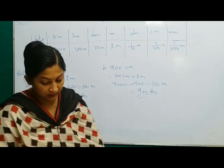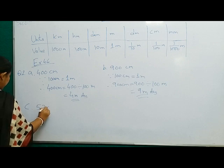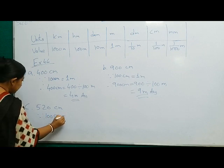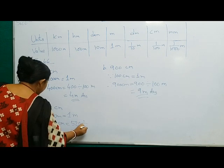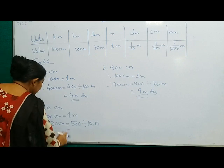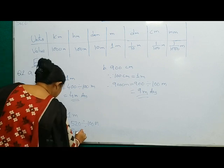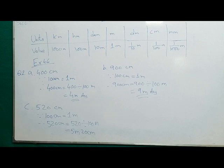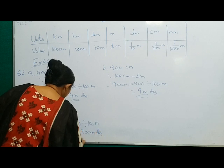One more I want to do, that is number C. Number C is given 520 centimeters. Since 100 centimeters is equal to 1 meter, therefore 520 centimeters is equal to 520 divided by 100. When you divide, you will get 5 as the quotient — so this 5 will be meters — and the remainder will be 20, so this 20 will be centimeters. The answer is 5 meters and 20 centimeters, meaning we have changed into two units.